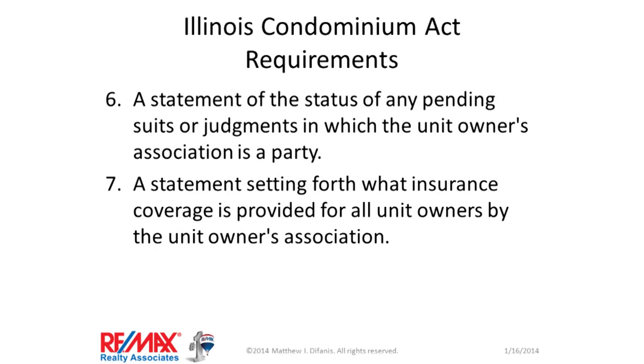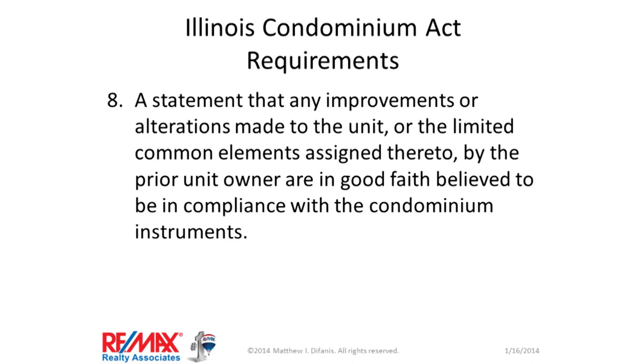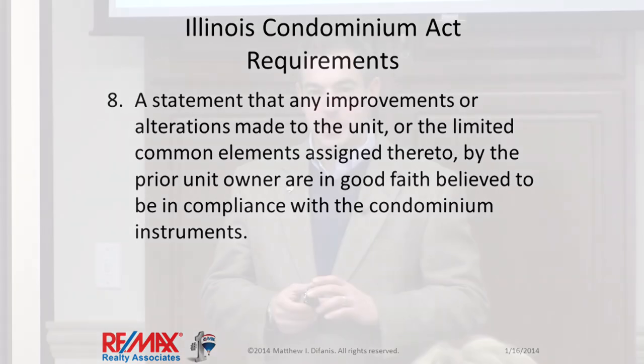Number six: a statement of the status of any pending suits or judgments in which the unit owners association is a party. Number seven: a statement setting forth what insurance coverage is provided for all unit owners by the unit owners association. Number eight: a statement that any improvements or alterations made to the unit or limited common elements by the prior unit owner are in good faith believed to be in compliance with the condominium instruments. How many of you have provided all eight of those items on demand when listing condos? You don't have to have them every time — you can get all the way to closing and never look at or provide any of them.